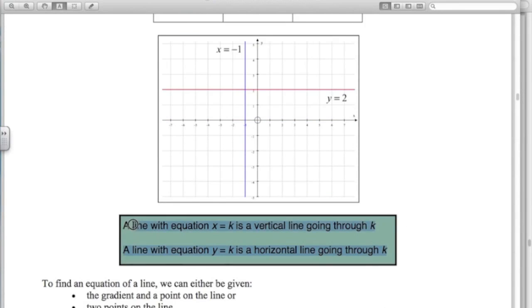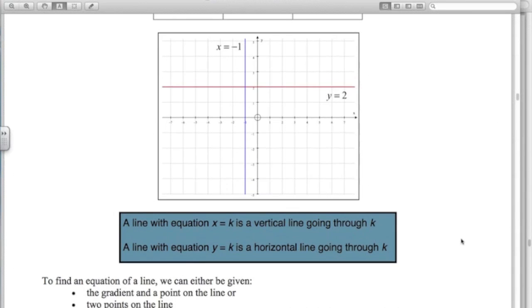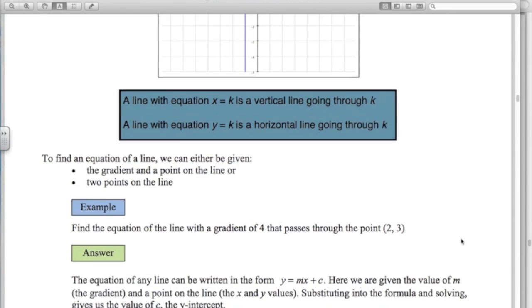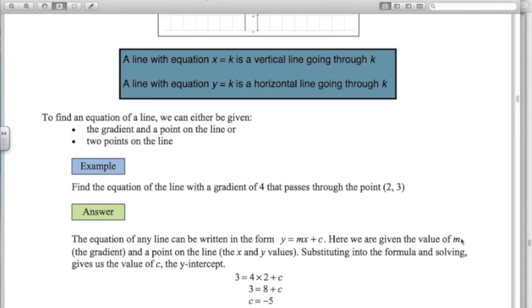Just emphasize that in this thing here. One more example of what I was talking about. Find the equation of the line where the gradient of 4 passes through the point 2, 3. So I'll just go through this one more time.